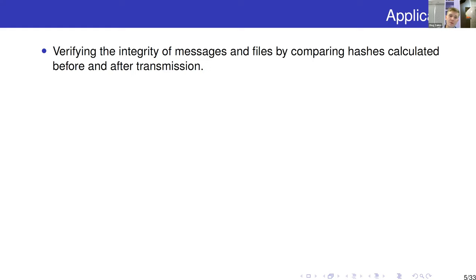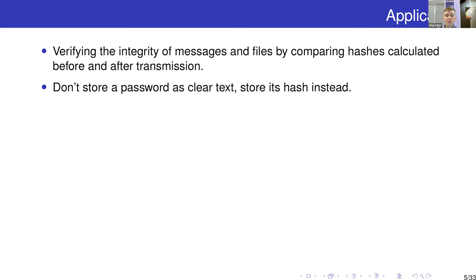Two small examples: first, verifying the integrity of messages and files. Before sending a huge file, a hash of the message can be created, and after transmission, if the hashes are equal, then with high probability the integrity is verified. The second widespread variant: don't store passwords as clear text in the operating system, because an intruder could find and steal them. Instead, a hash of the password is stored, and even if an intruder finds this file, they will not be able to find the password because pre-image resistance of the hash function must be overcome.